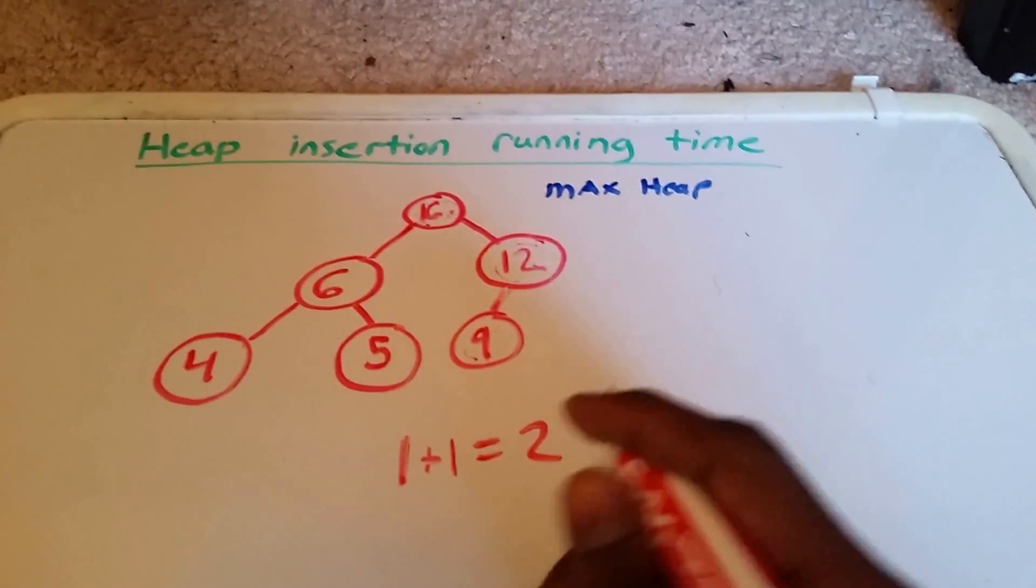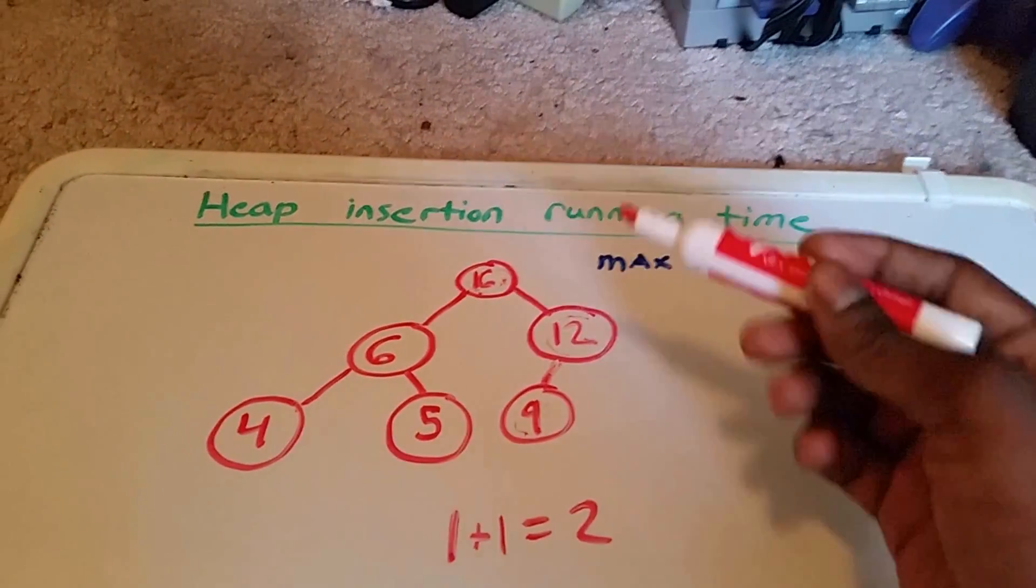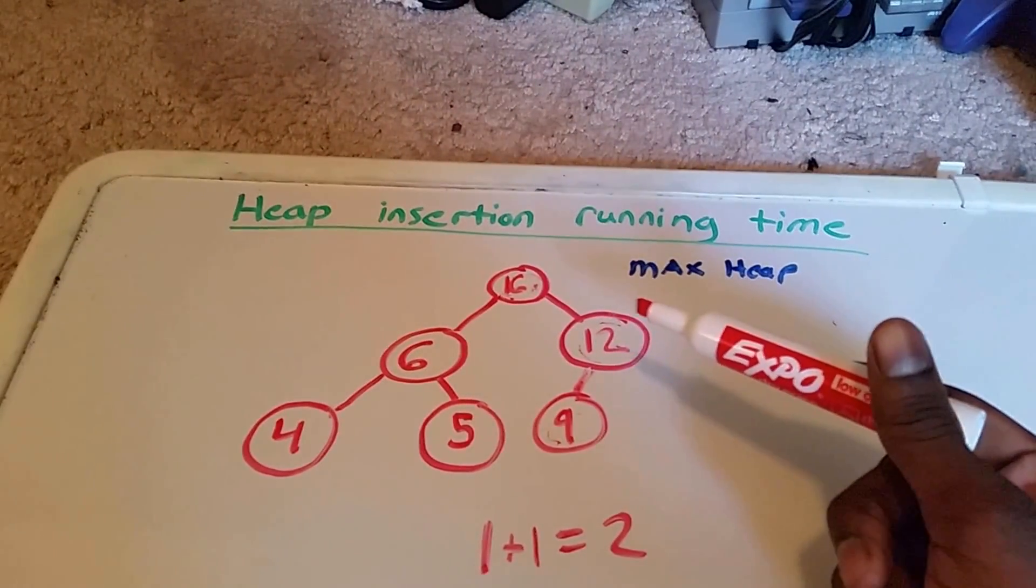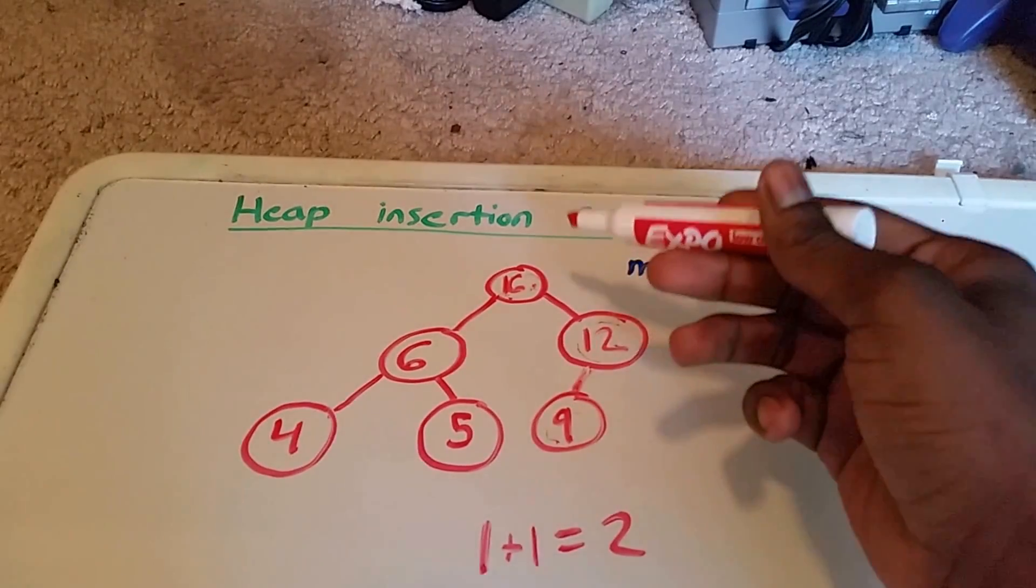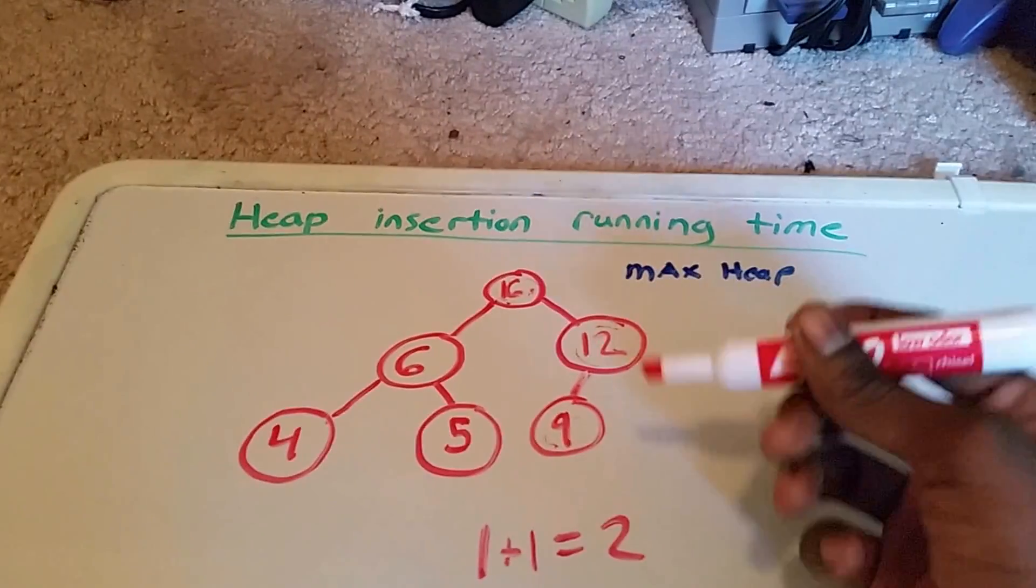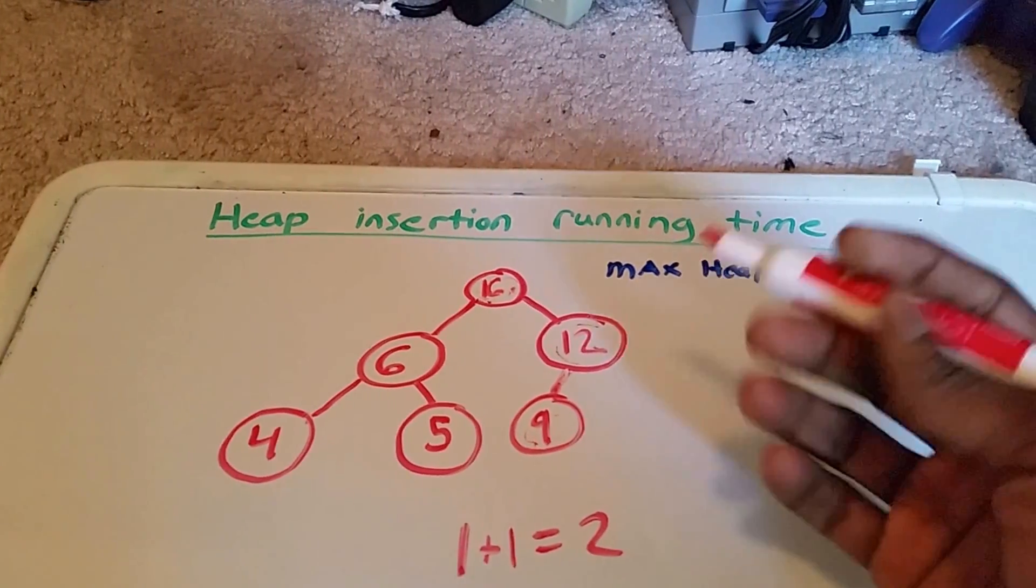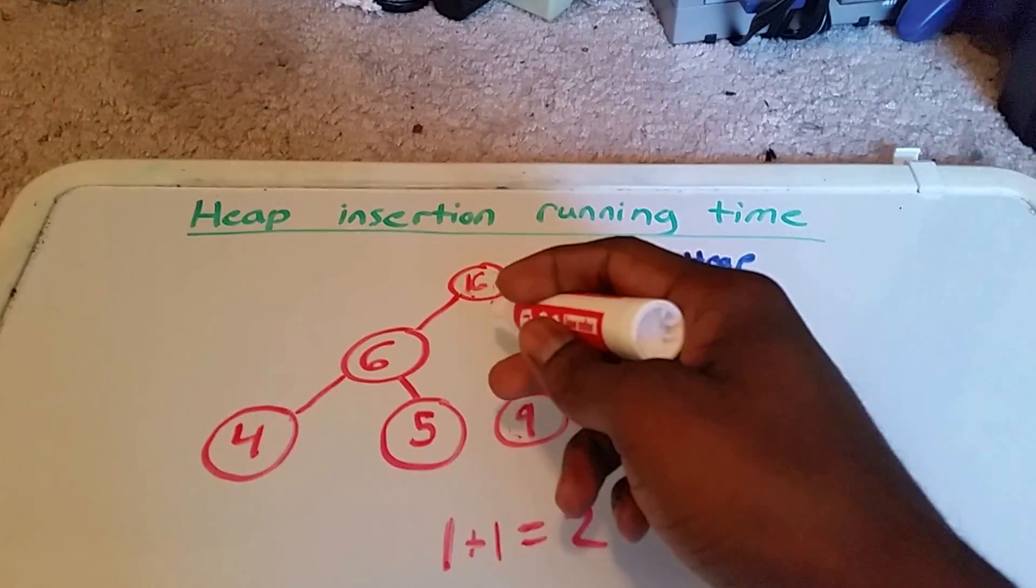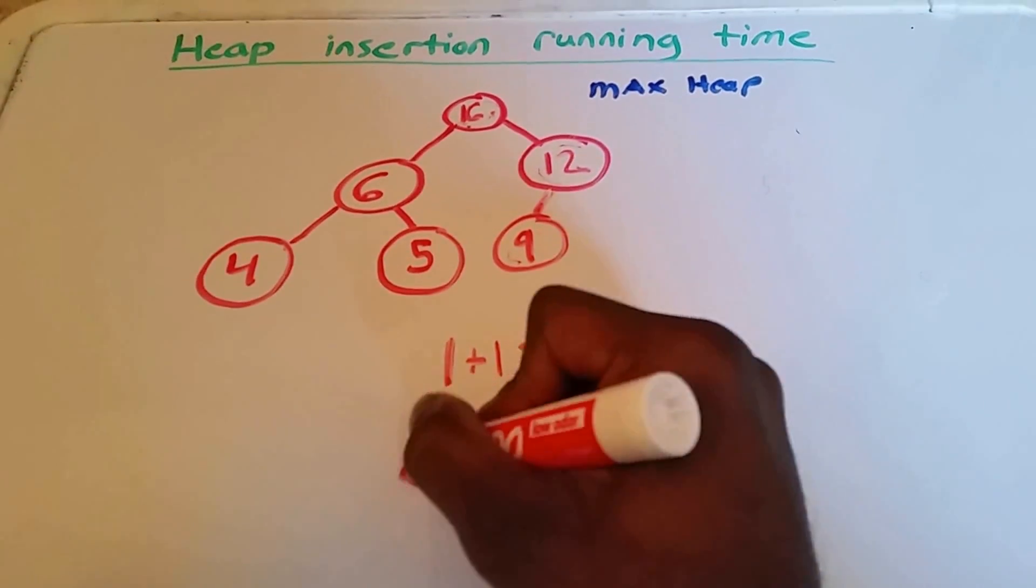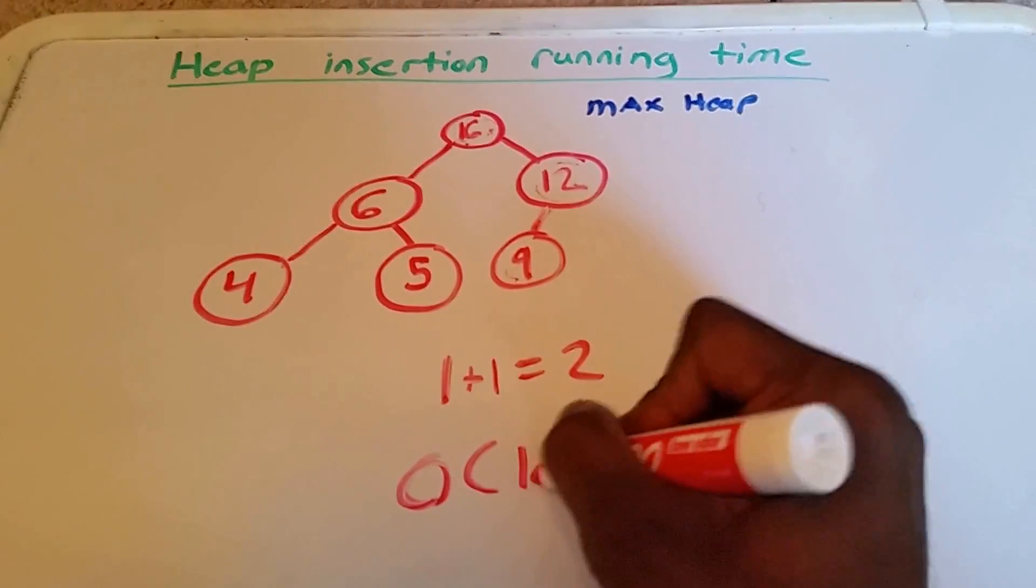So what does this mean? That means that the number of operations required depends only on the number of levels the new element must rise to satisfy the heap property, which in this case is a max heap. And so thus our running time is big O log n.